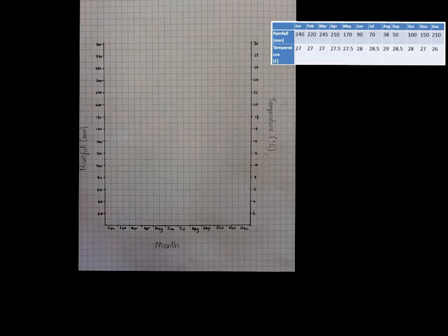Along the left-hand y-axis, we need to add a scale for the rainfall. The highest average rainfall in any given month in the Amazon rainforest, according to our data, is 245 millimetres in March. Therefore, the highest our scale needs to go to is 245 millimetres. However, to leave some extra space, I've taken it up to 300 millimetres.